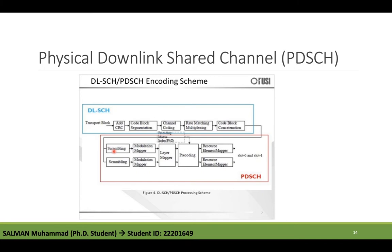For each codeword, bits are scrambled with a certain scrambling sequence. Then a Modulation Mapper symbol-modulates the scrambled codewords using one of the modulation schemes: QPSK, 16-QAM, 64-QAM, or 256-QAM — depending on the incoming codeword.